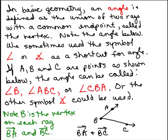Note B is the vertex on each of those rays. When I describe the rays down here, BA and BC, that's the first letter of the rays.